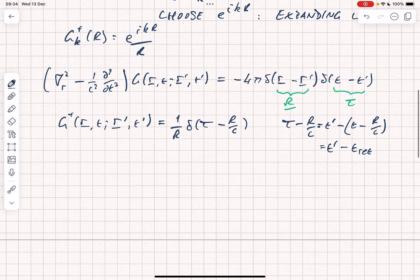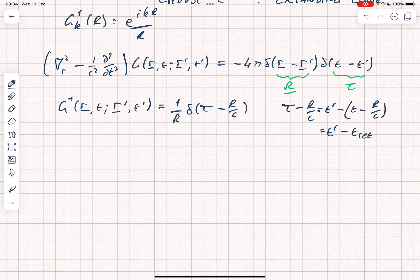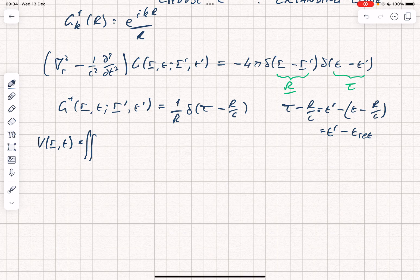Using that Green's function, we can now write the solution v of r and t is just the double integral of g plus, which is actually a function of r and tau, multiplied by rho of r prime t prime divided by 4 pi epsilon naught dr prime dt prime.